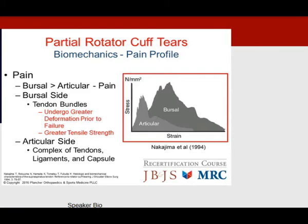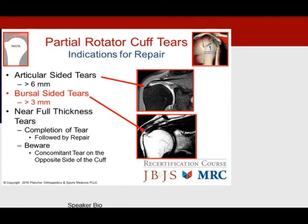Bursal side tears hurt more than articular side tears because their bundles undergo greater deformation prior to failure due to greater tensile strength. Articular side tears are more often silent. Articular side tears greater than 6 millimeters need repair; bursal side tears greater than 3 millimeters should be considered for operative intervention. When a near-full-thickness tear is reported by the radiologist, suspect a concomitant tear on the opposite side and examine both shoulders.